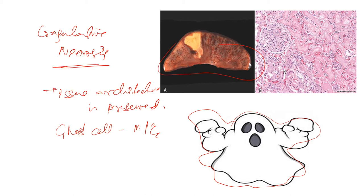To summarize coagulative necrosis: it is the most common type, occurs due to denaturation of proteins, affects solid organs — heart, liver, kidney (HeLiKi) — and microscopically shows ghost cells with preserved tissue architecture. Just make a mnemonic that works for you.